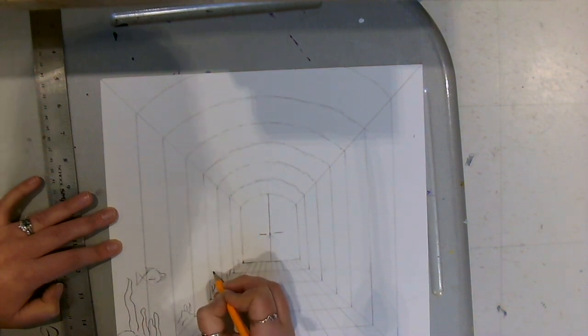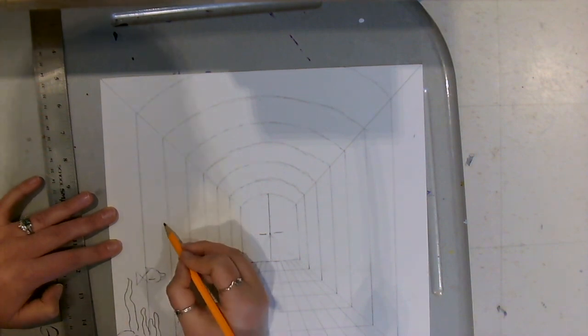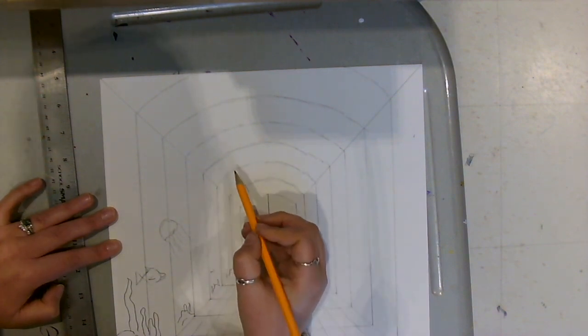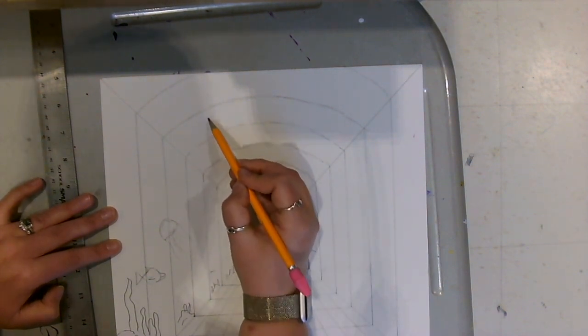Making sure any details like animals or sea life is going to be larger towards the outside and smaller towards that center vanishing point on your paper. Be sure to fill up your aquarium with a variety of sea life whether it be jellyfish, fish, scuba divers, anything you want.